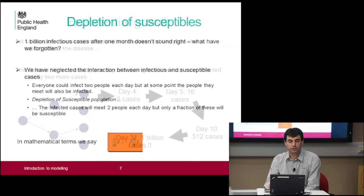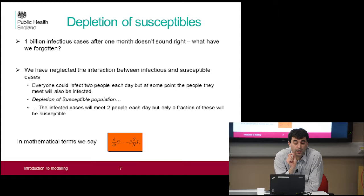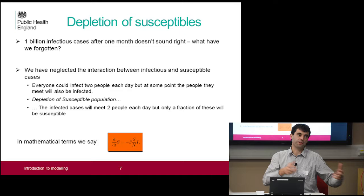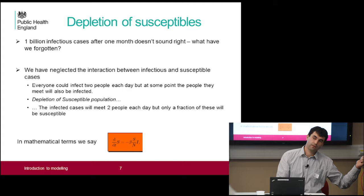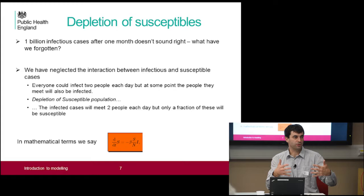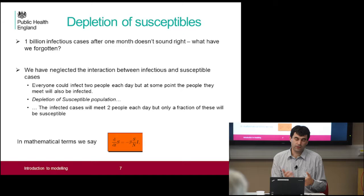So what could be wrong? One of the things we've forgotten is the interaction between people. We may meet exactly two people, but those two people will be meeting other people in a quite complicated social network. They might have been infected earlier in the disease, so you're not guaranteed to be meeting two susceptible people at each point. We call that depletion of susceptibles, and that's quite an important factor.